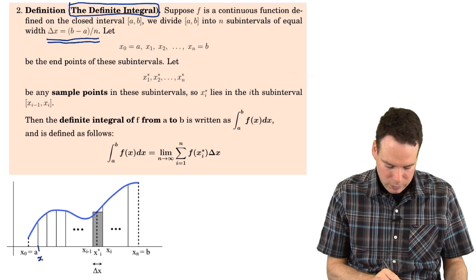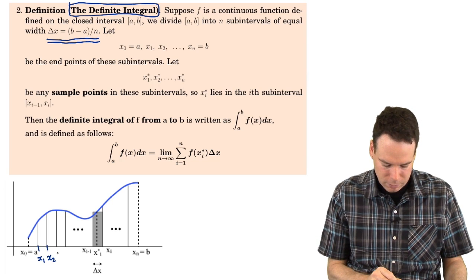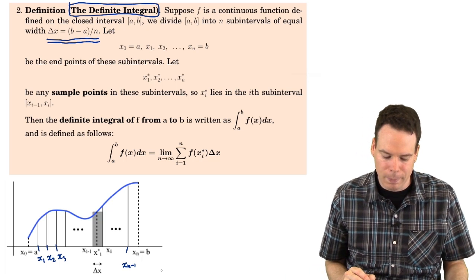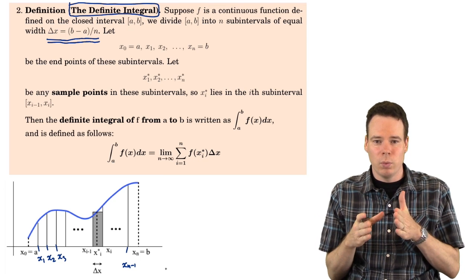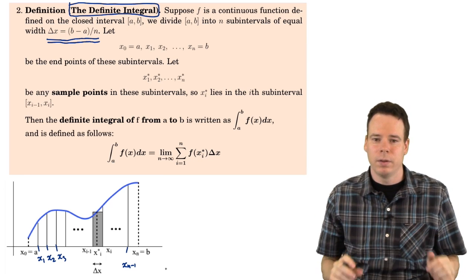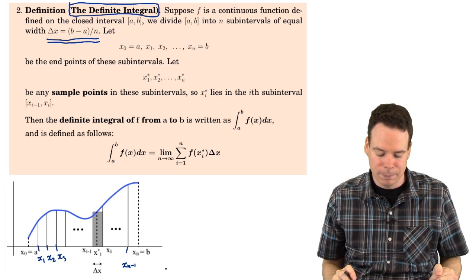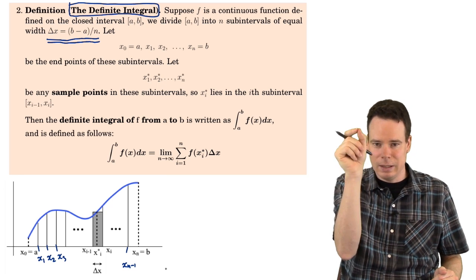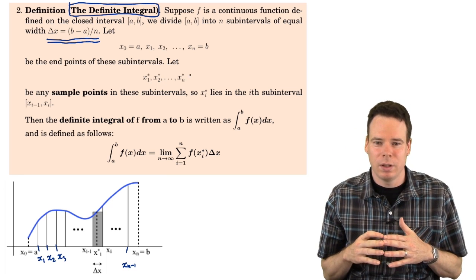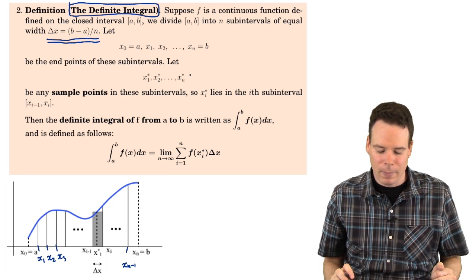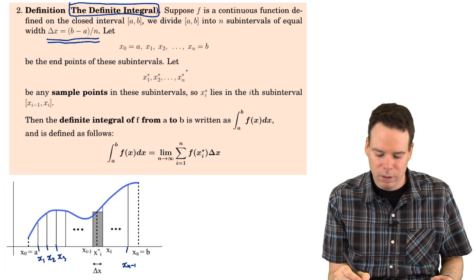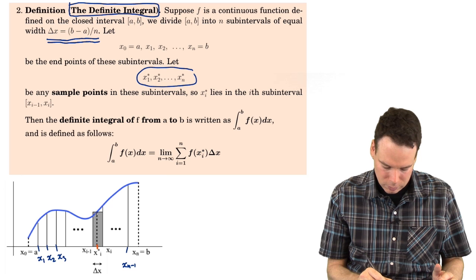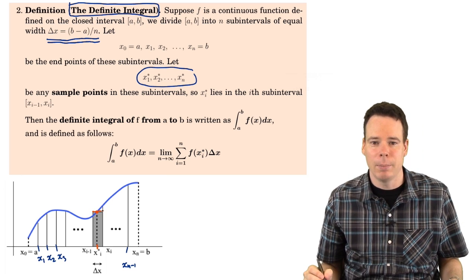The endpoints of these sub-intervals we'll call x₀, x₁, x₂, x₃, all the way up to x_{n-1} and x_n. Within each slice, we pick a sample point — typically the left-hand or right-hand endpoint, though in general we could take any sample point. These are the xi stars: we can take any point within the interval, sample the function there, and use that to cap the rectangle off.